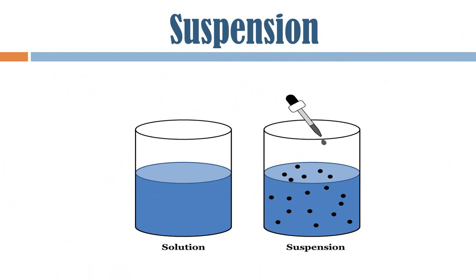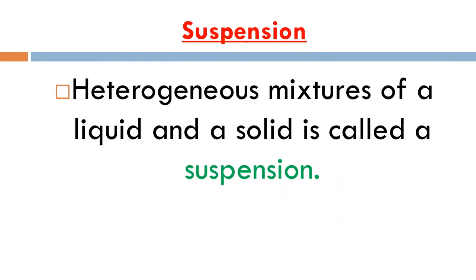Next, let's see what a suspension is. A suspension is a heterogeneous mixture of a liquid and a solid. A heterogeneous mixture is one where two or more phases are present after mixing. So a suspension is a type of heterogeneous mixture of a liquid and a solid.